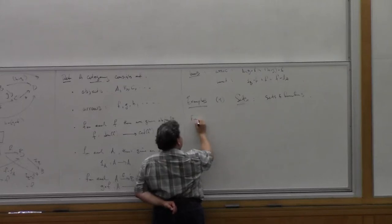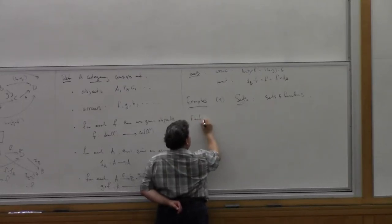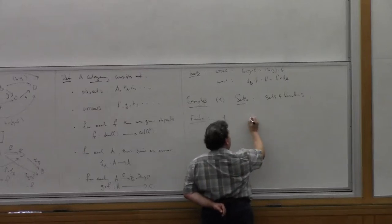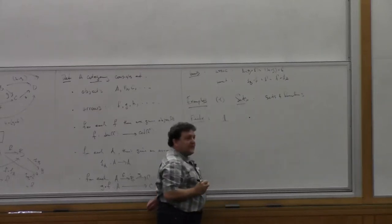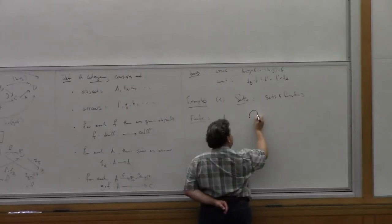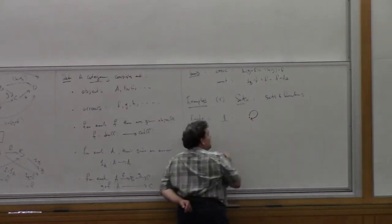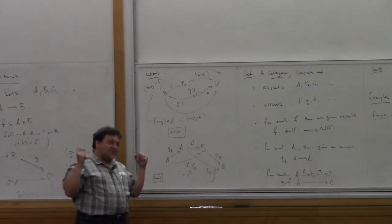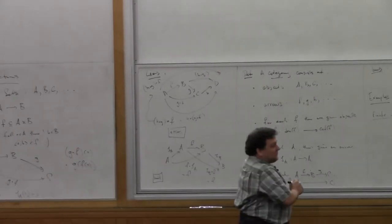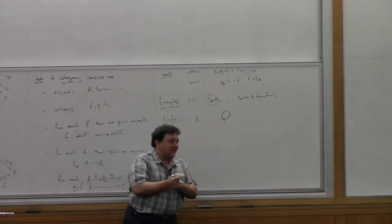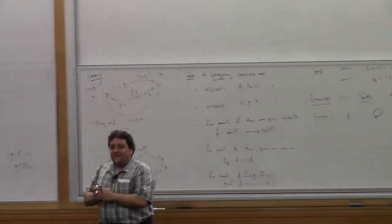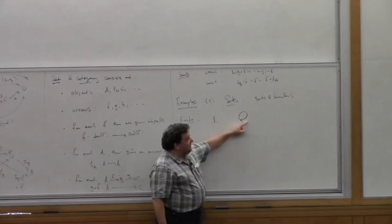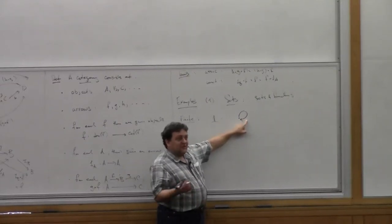There are some interesting finite categories. For example, there's the category 1, which has one object and one arrow — namely the identity arrow it has to have. There's a category 2 with two objects and one arrow between them, with the identity arrows. And there's a category 3 with three objects. It has the identity arrows, and then there is one composite that you can make. There's also the category 0, the empty category, which has no arrows and no objects.